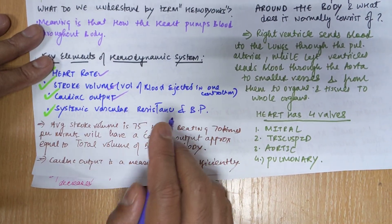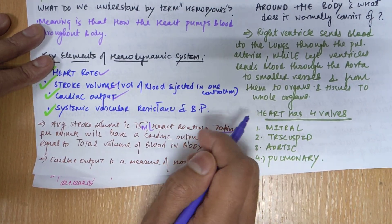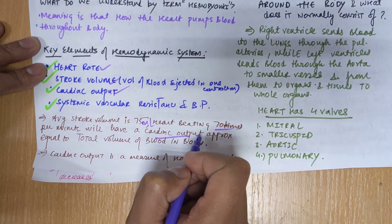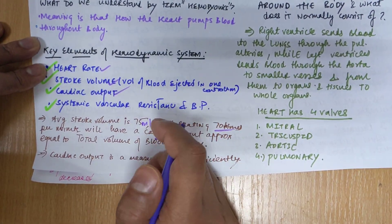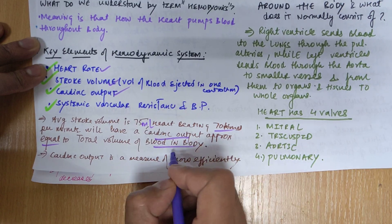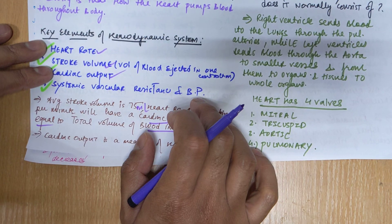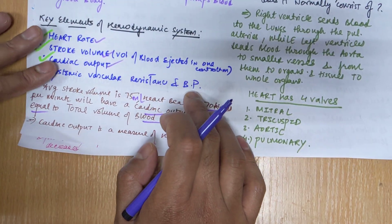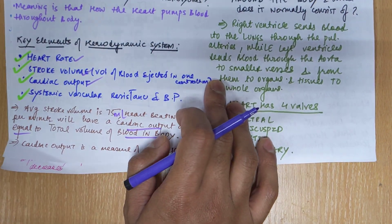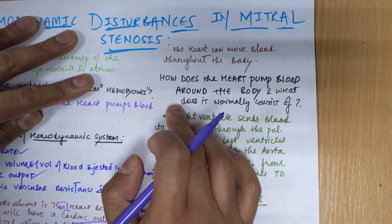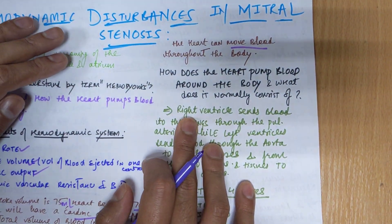The average stroke volume is 75 ml and the heart rate is 70 beats per minute. Multiplying these gives the cardiac output, which is approximately 5,600 ml — about 5 liters — equal to the total volume of blood in the body. Cardiac output is the measure of how efficiently the heart can move blood throughout the body.